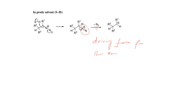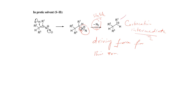Why is this the driving force for this reaction? Because the nitrogen molecule is very stable. So due to this reason, the bond between carbon and nitrogen breaks towards the positively charged nitrogen atom, and it is removed in the form of a nitrogen molecule. As a result, a carbocation intermediate is produced.